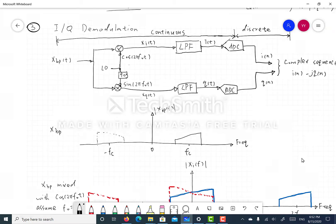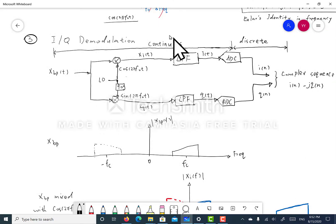What you're seeing here is a very common demodulation receiver architecture. Here you have two mixers. The XBP of T is the incoming signal. You have the in-phase channel mixer and the quadrature phase channel mixer. You can see that the LO of those two mixers are coming from the same source but 90 degrees different in phase.